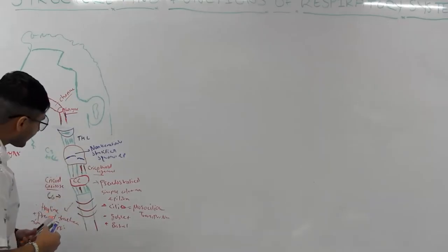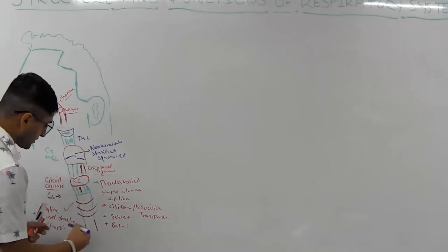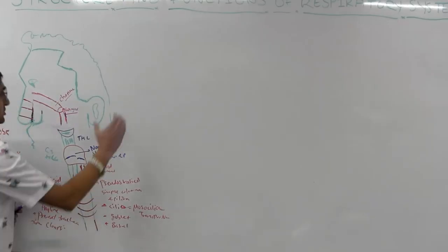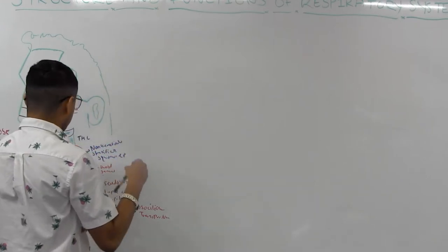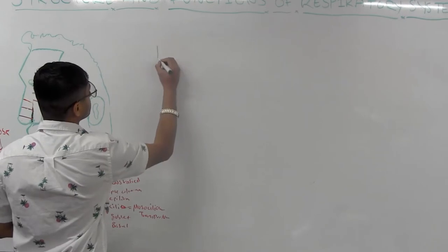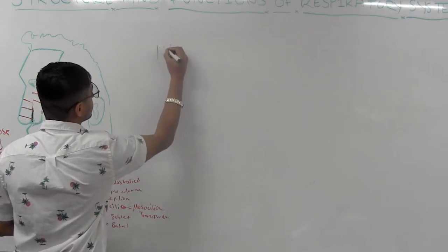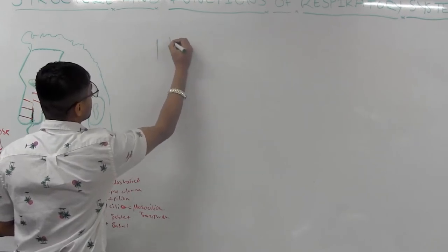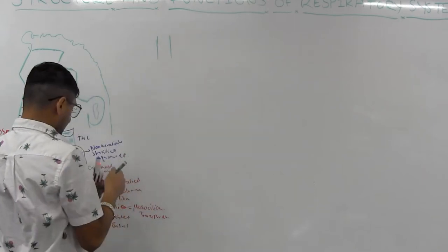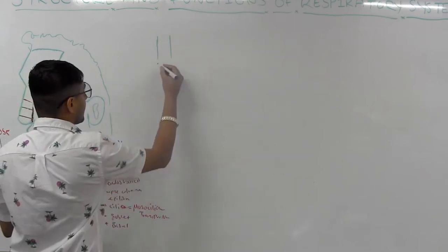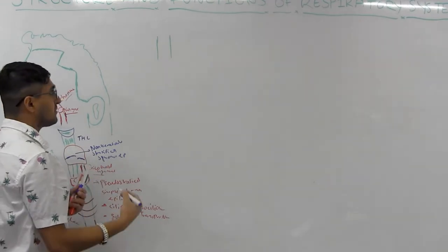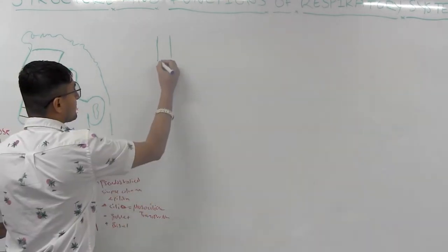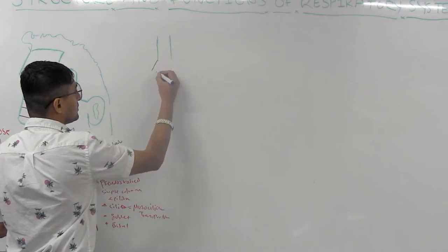We talked about the larynx and trachea. Now we have to talk about the trachea going down. The trachea goes, and at the level of T4-T5, or from the sternal angle, what's going to happen is this trachea divides into two parts.